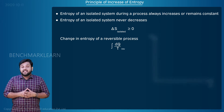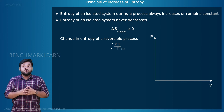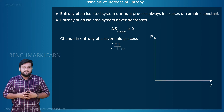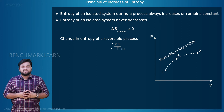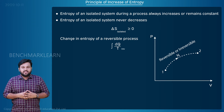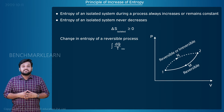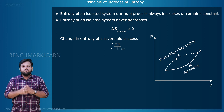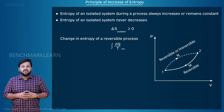Consider a closed system undergoing a cycle. The cycle consists of two processes. One process may be a reversible or irreversible process from state 1 to 2 through path 1-L-2. The second process is definitely a reversible process from state 2 to 1 through path 2-M-1, as shown in the PV diagram.